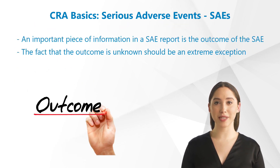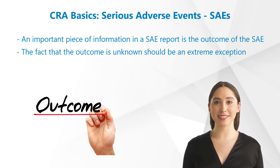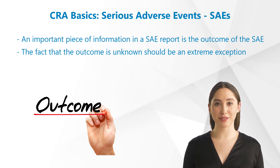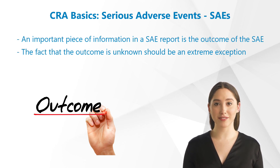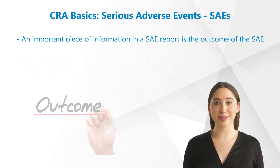Another important piece of information in a serious adverse event report is the outcome of the serious adverse event. The fact that the outcome is unknown should be an extreme exception. This is often the case with an initial serious adverse event report, but in the course of follow-up reports the outcome should be reported to the pharmacovigilance department at some point.